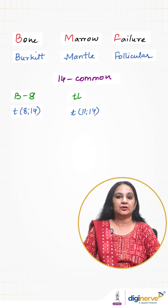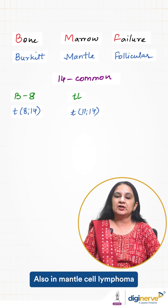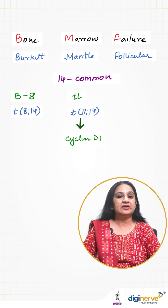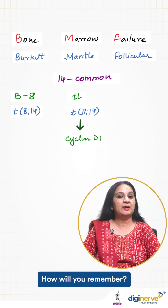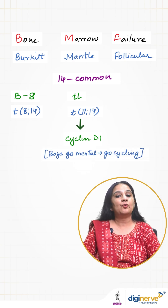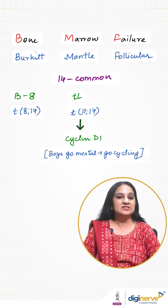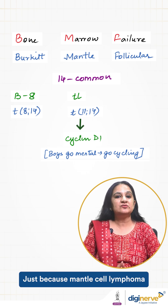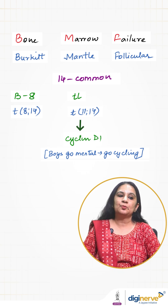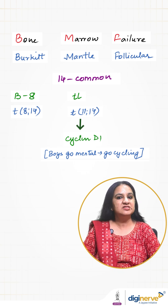Remember the common number. Also in Mantle cell lymphoma, please note, cyclin D1 is positive. To remember this: boys go mental and go cycling — no offense to boys — just because Mantle cell lymphoma is more common in boys. So, boys go mental and go cycling.